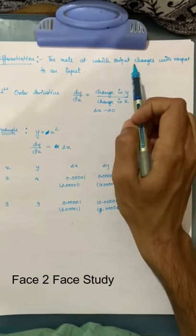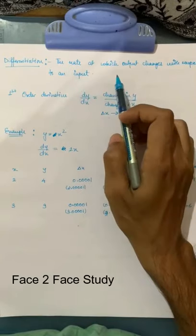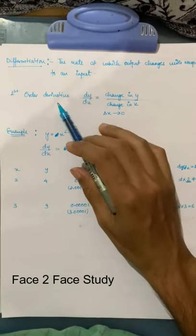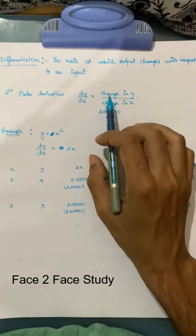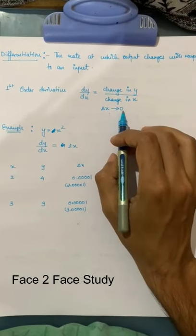Differentiation is the rate at which output changes with respect to an input. First order derivative is denoted dy/dx, which represents change in y with respect to change in x, where the change in x value is almost equal to 0.